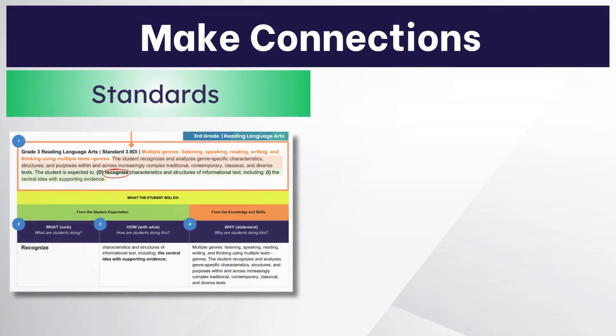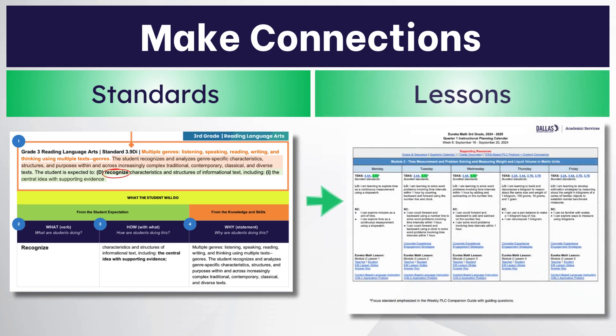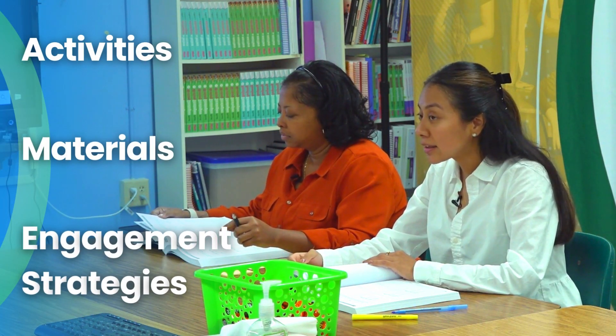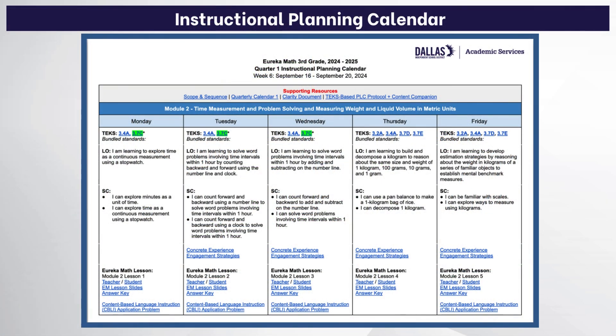Now that we've practiced deconstructing the standards, we can begin to make connections between the standards and the lessons in which they appear, to better understand what students should be learning to do. In studying the lesson, you should examine its activities, materials, and engagement strategies, and be able to articulate the relationship between the standard, the learning objective, and the success criteria.